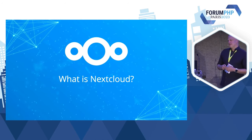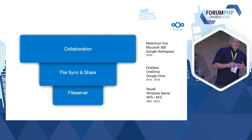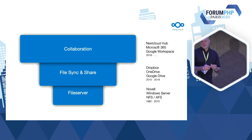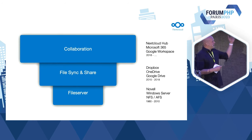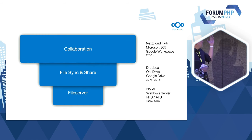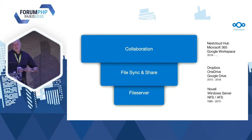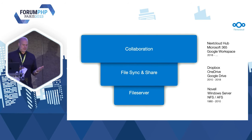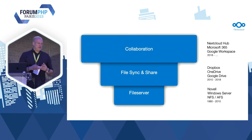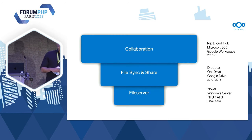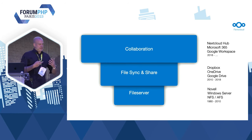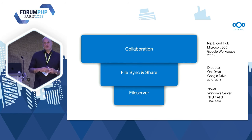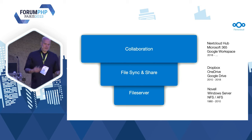So what is Nextcloud? I see this as a history chart. You have the file server with Novell and Microsoft in the 80s and 90s. Then a bit later there was file sync and share — like Dropbox or OneDrive or Google Drive — with mobile apps, web interface, and versioning. But what we all do and use today is collaboration software: software to work together over the internet, like Microsoft 365, Google Workspace, or Nextcloud Hub.